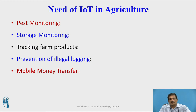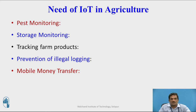Usually the farmers are facing difficulty in identifying pests at a particular time, in a particular season. Because of that, they are facing an economical loss and they don't know how to identify a pest timely. But IoT will enable them to remotely identify that particular pest at a particular time.